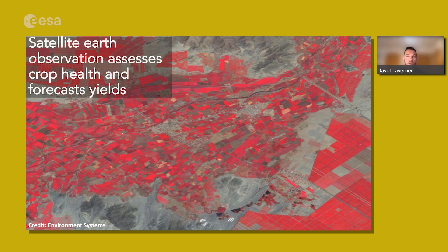Moving to agriculture, Earth observation can assess crop health and forecast yields at the individual field level, but also at the farm, regional, or even national level. It can provide advice to farmers on when to plant and harvest their crops, and can also identify and forecast the risk of diseases and pest outbreaks.